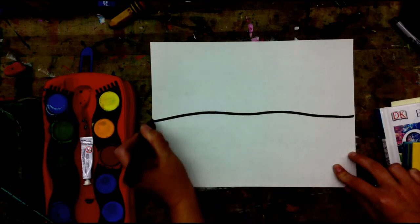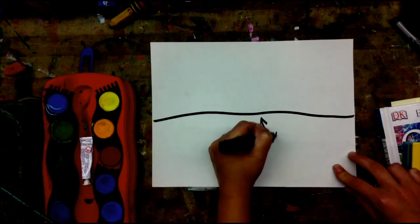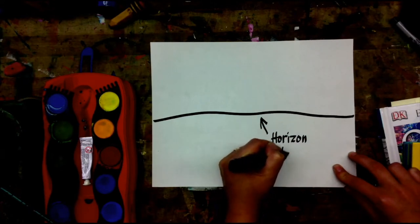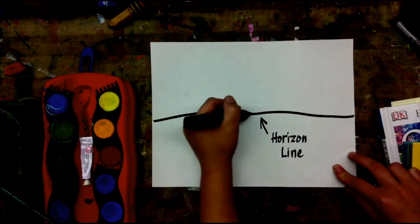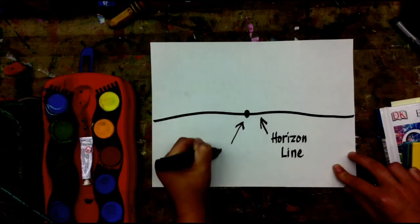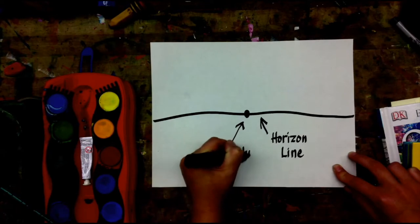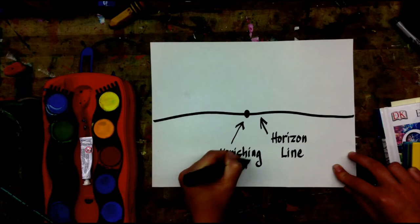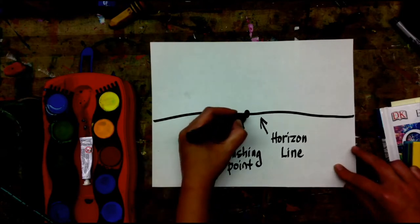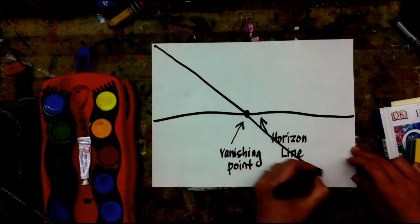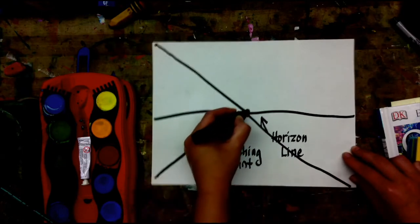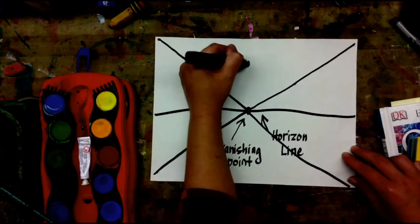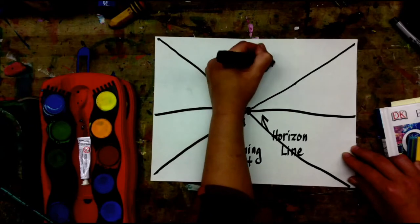To do that, you first have to draw a horizon line — the horizon line will go left to right on your paper. Then you need a vanishing point. You will draw converging lines, or just think of an X or lines that intersect. And this is what's going to help us create the illusion of a 3D space.